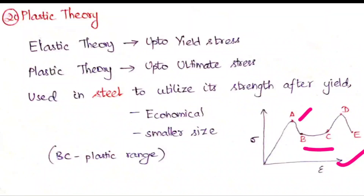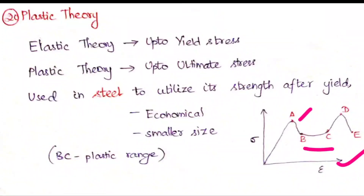Why do we go for plastic theory? Because steel has its ductility property, so even though it reaches its yield stress, it will sustain with its ductility until the ultimate stress. Why not use that additional strength as well — that is how this concept actually arrived.